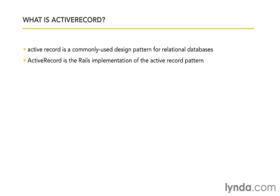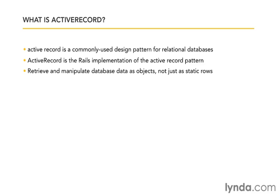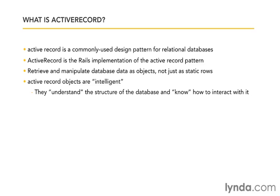What the Active Record design pattern does is it allows us to retrieve and manipulate database data as objects in an object-oriented way, not just as static rows of data. If you've ever worked with database data as rows, you know it can be very cumbersome to pull back the right data, manipulate it, and write code to resubmit it to the database. Instead, Active Record makes our objects intelligent — they understand the structure of the database and know how to interact with it.